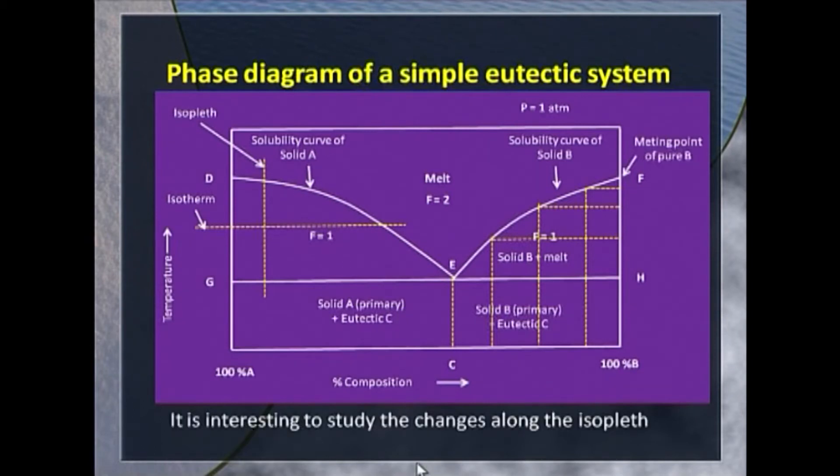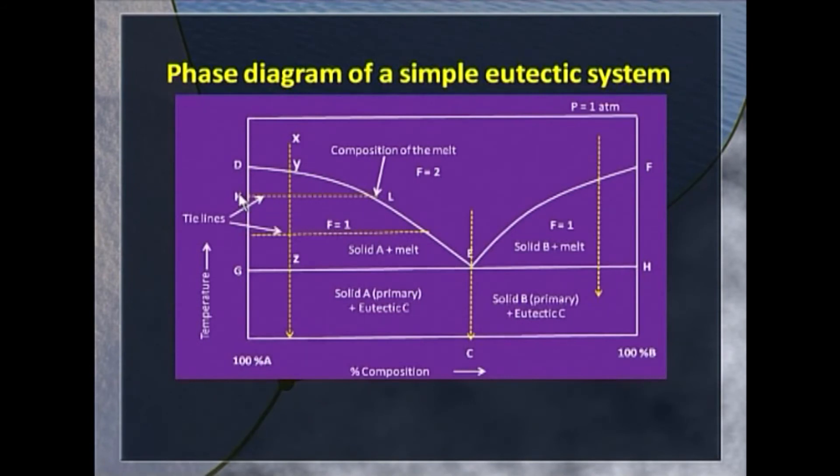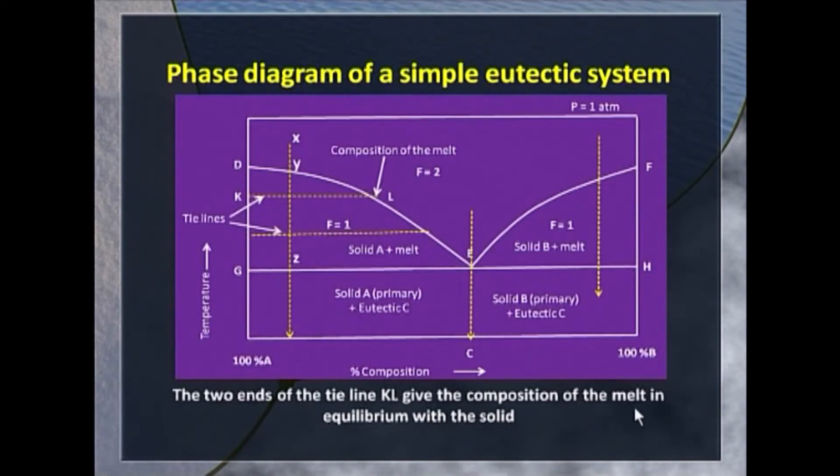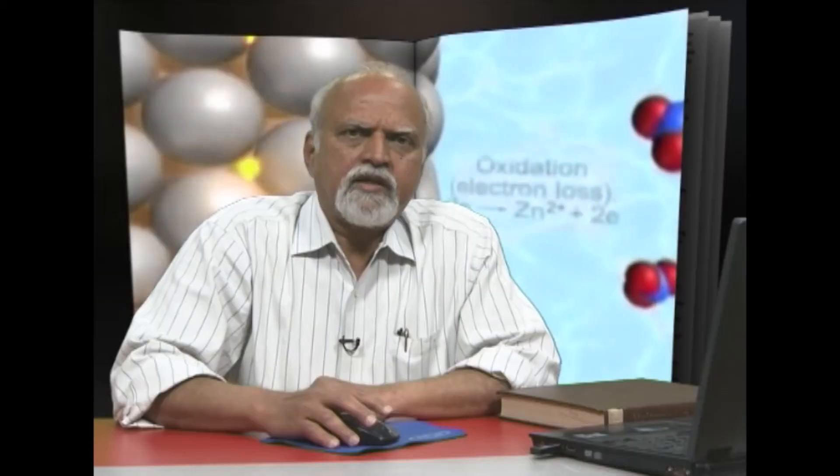An interesting study will be what changes take place in the system along the isopleth. For understanding that, we must remember that there are horizontal lines which we call the tie line. What is a tie line? The two ends of the tie line are useful to us. They give us the composition of the melt in equilibrium with the solid. Here you have a tie line. Solid A, one end corresponds to solid, and the other end which is on the curve DE gives us the composition of the melt that is in equilibrium with the solid. So our overall composition of the system that we have taken is this. When you take it to this temperature, it splits into two: solid A and the melt.